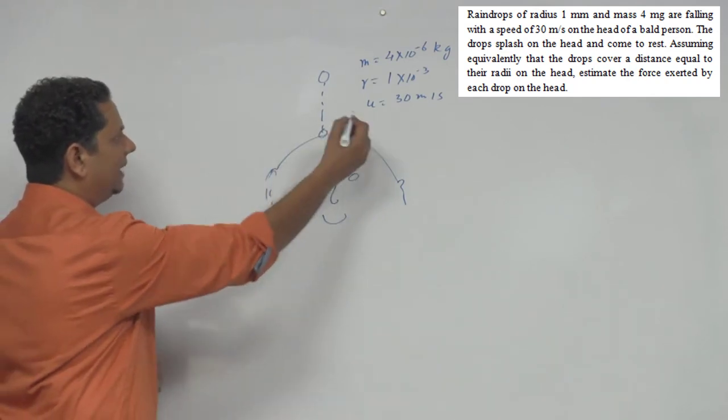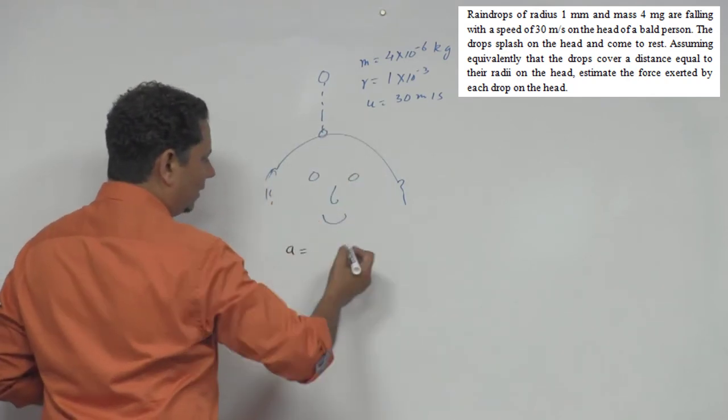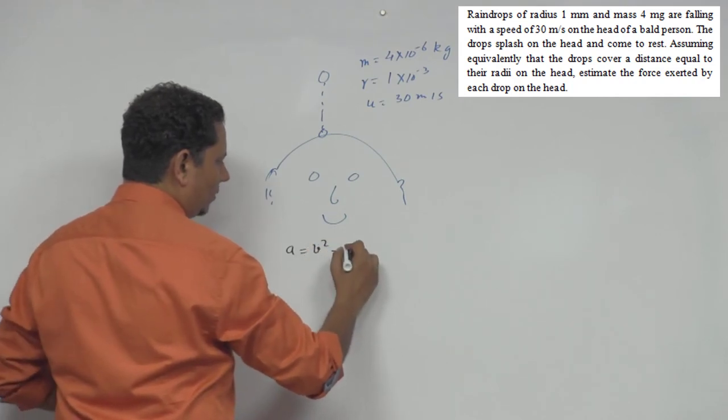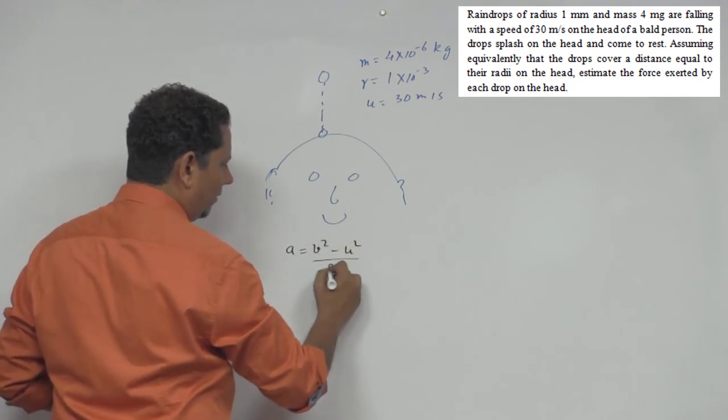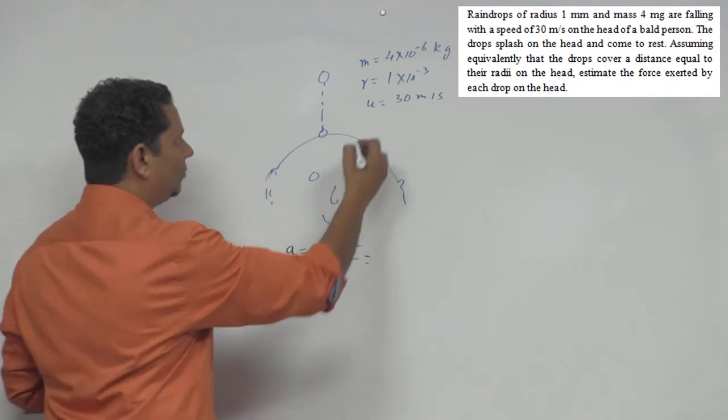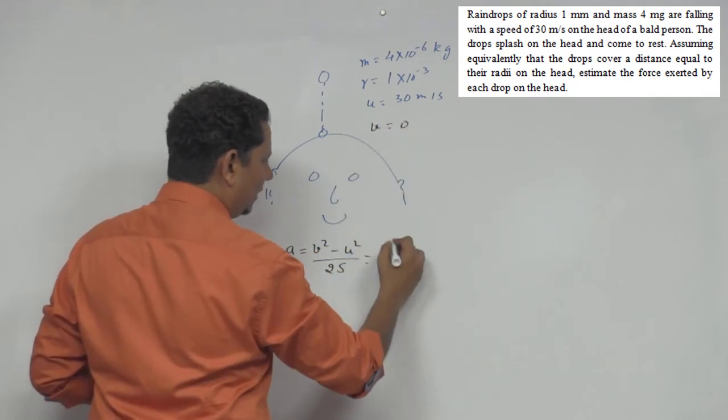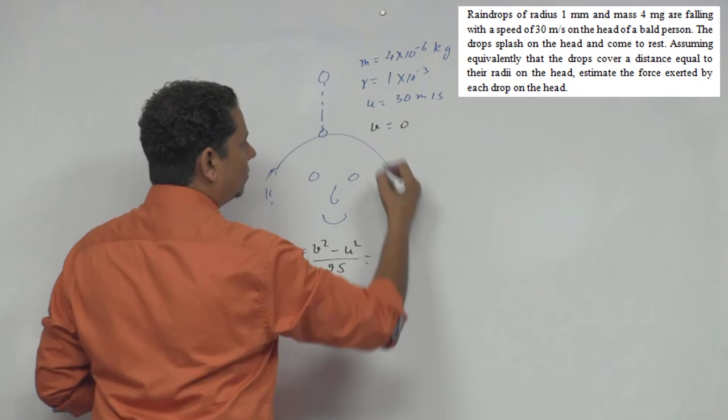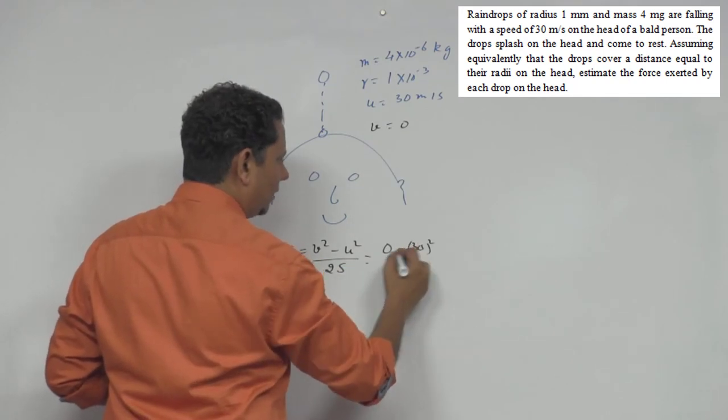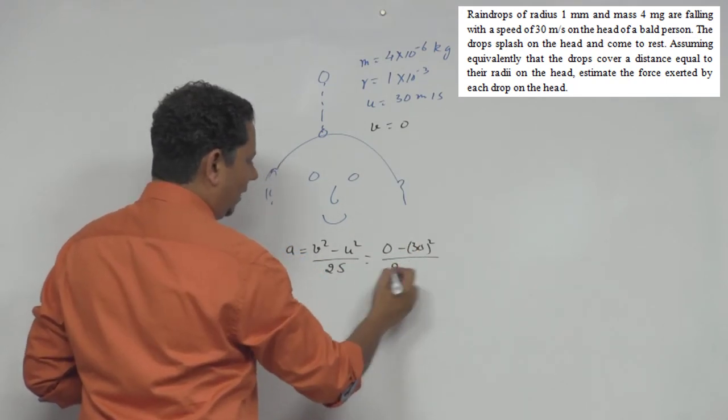In this case, if we find the acceleration using the third equation of motion, we can write acceleration will be equal to v² minus u² divided by 2s. V, the final velocity, is zero.